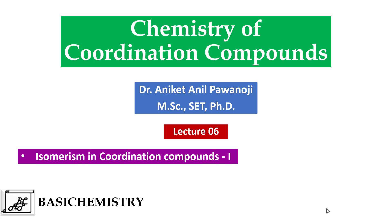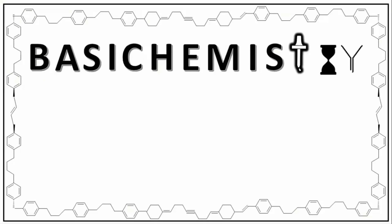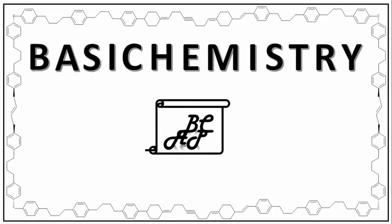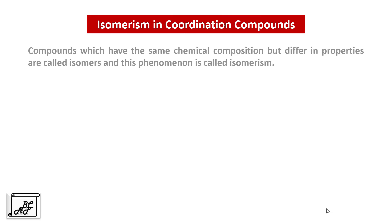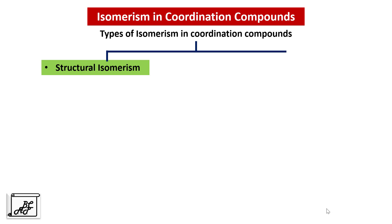For simplicity, Isomerism in Coordination Compounds is divided into two parts. The compounds which have same chemical composition but differ in properties are called Isomers, and this phenomenon is called Isomerism. There are basically two types of Isomerism in Coordination Compounds: the first is Structural Isomerism and the second is Stereo or Space Isomerism.